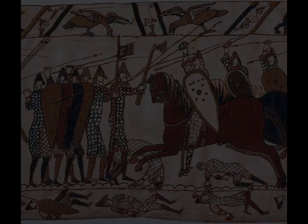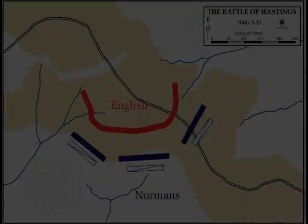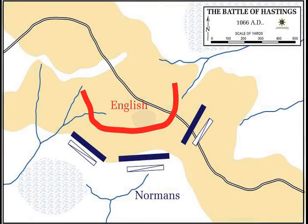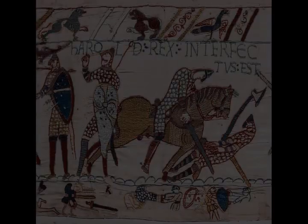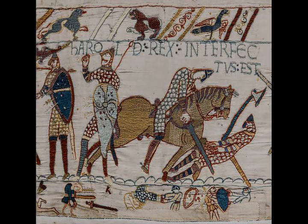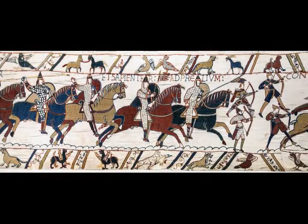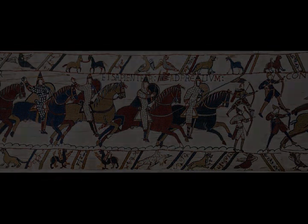In April 1066 Halley's comet appeared in the sky, and was widely reported throughout Europe. Contemporary accounts connected the comet's appearance with the succession crisis in England. William mustered his forces at St. Valery-sur-Somme, and was ready to cross the English Channel by about the 12th of August. But the crossing was delayed, either because of unfavourable weather or to avoid being intercepted by the powerful English fleet. The Normans crossed to England a few days after Harold's victory over the Norwegians, following the dispersal of Harold's naval force, and landed at Pevensey in Sussex on the 28th of September. A few ships were blown off course and landed at Romney, where the Normans fought the local fyrd. After landing, William's forces built a wooden castle at Hastings, from which they raided the surrounding area. More fortifications were erected at Pevensey.